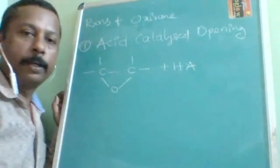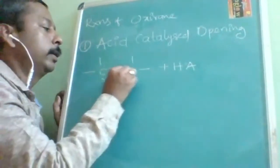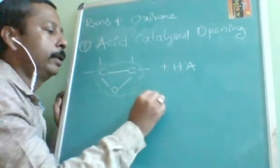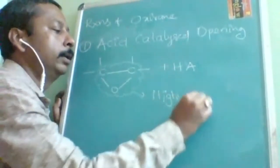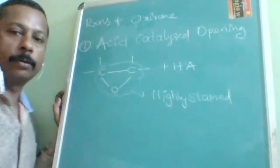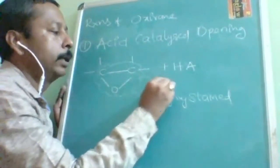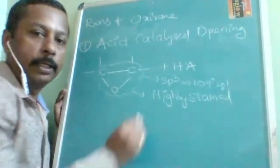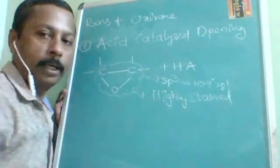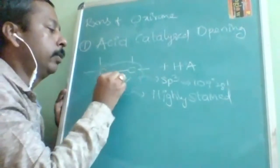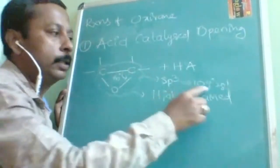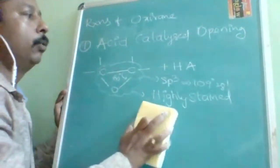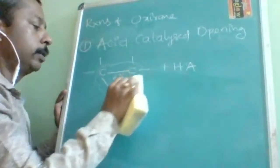Now the properties of oxirane: the main issue is that it is a highly strained ring. Each carbon is SP³ hybridized, requiring a bond angle of 109°28', but in the three-membered ring the bond angle is only 60°. This angle strain makes it highly unstable, so it will readily undergo ring opening whenever possible.